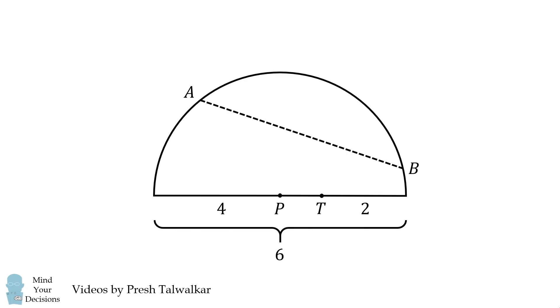Label the center of this semicircle as P. The radius of the semicircle will be one half its diameter and therefore it will be equal to 3. Consequently, PT has a length equal to 1.